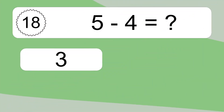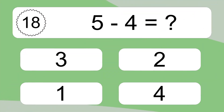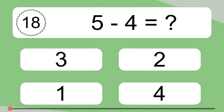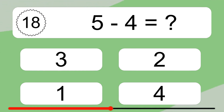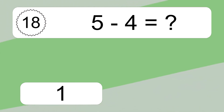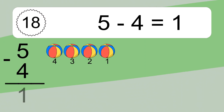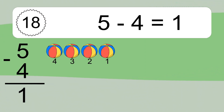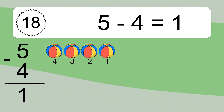5 minus 4 equals what? 5 minus 4 equals 1. Let's count it: 4, 3, 2, 1.